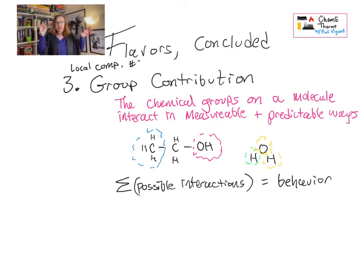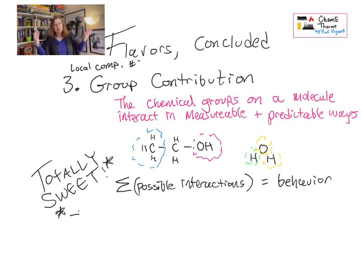So what you do is you make a table of all these possible interactions, and then when you want to say here is molecule A, here is molecule B, you sum up the different interactions that make up molecule A, sum them up for molecule B, and then throw them together and see what happens. That is the group contribution method.